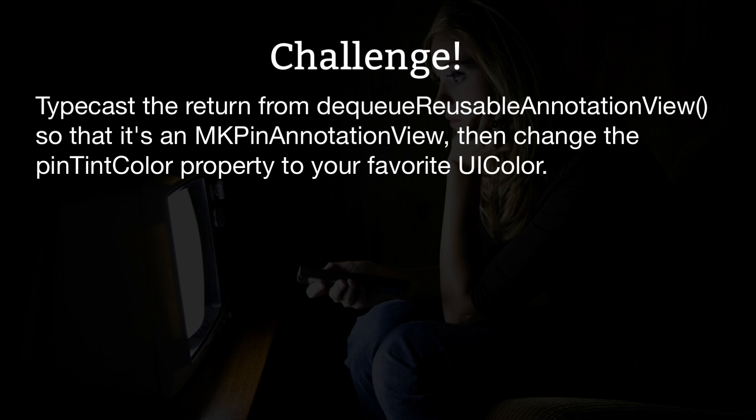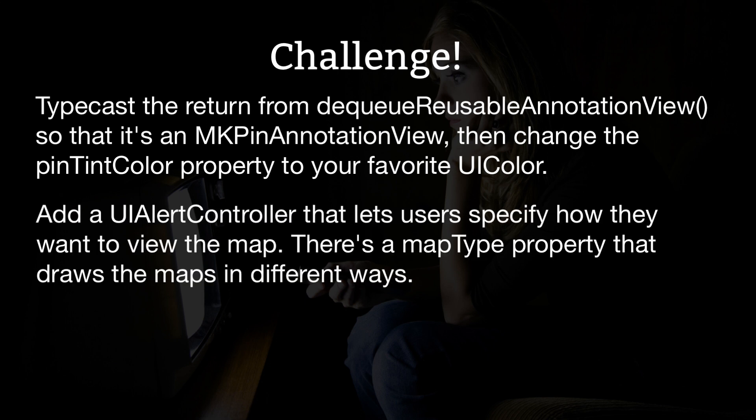Second, add a UIAlertController that lets users specify how they want to view the map. There's a map type property that draws the map in different ways — for example, dot satellite gives a satellite view of the terrain.